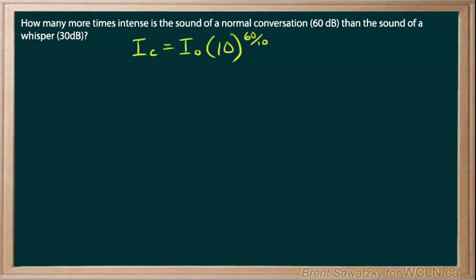So in other words, 60 decibels is just the same as a 6 times from the base.